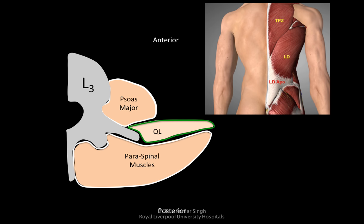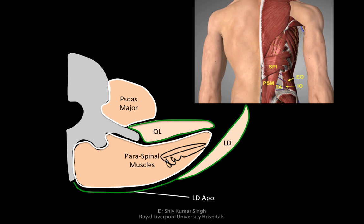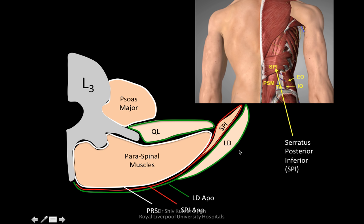There are certain other muscles which overlie these muscles, like the latissimus dorsi and the latissimus dorsi aponeurosis which covers the back. And if we go a little bit deeper, you have the serratus posterior inferior muscle which lies below the latissimus dorsi. The serratus posterior inferior aponeurosis actually lies between the PRS and the latissimus dorsi aponeurosis.